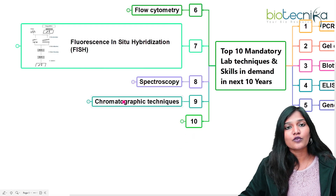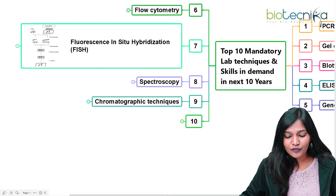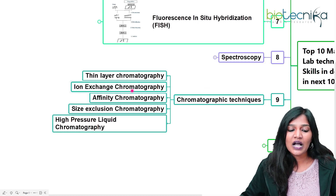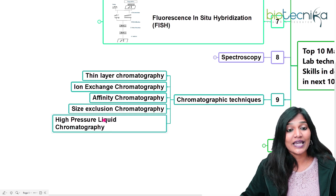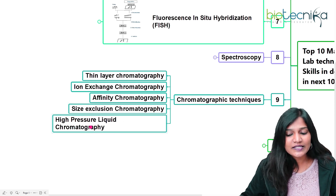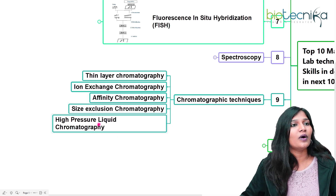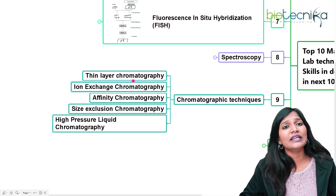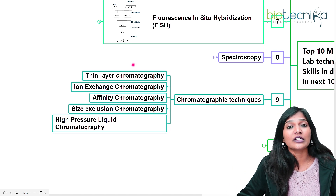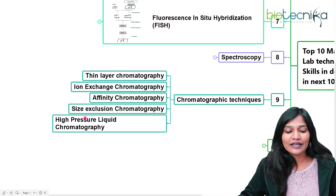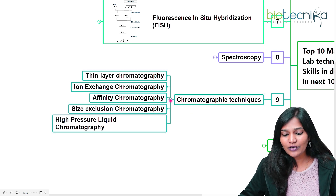The next technique is chromatography. There are many types: paper chromatography, thin layer chromatography, ion exchange chromatography, affinity chromatography, and HPLC. Learning HPLC first is recommended, especially if you want to go into company-related jobs in biotechnology, biopharma, or quality control — you definitely need to know HPLC.